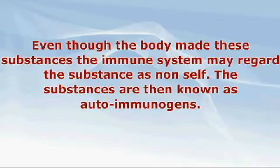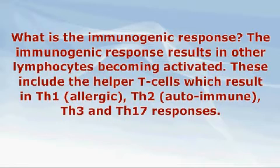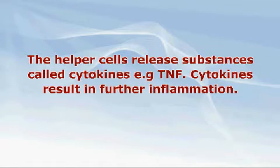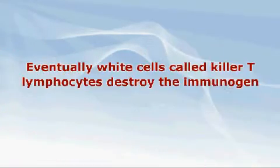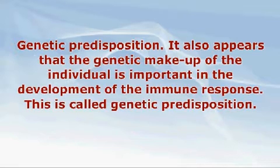What is the immunogenic response? The immunogenic response results in other lymphocytes becoming activated. These lymphocytes are known as helper T-cells. There are various types of response known as Th1 (helper 1), Th2, Th3, and Th17 responses. Abnormal TREG control of the immunogenic response is now regarded as the underlying cause of many modern diseases — for example, allergy, atopy, and autoimmune diseases. An abnormal Th1 response is associated with allergy, and an abnormal Th2 response is associated with autoimmune disease. The helper cells release substances called cytokines — for instance, tumor necrosis factor (TNF). Cytokines result in further inflammation, and eventually white cells called killer T-lymphocytes destroy the antigen.